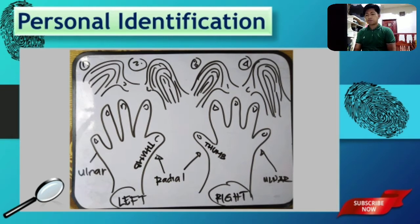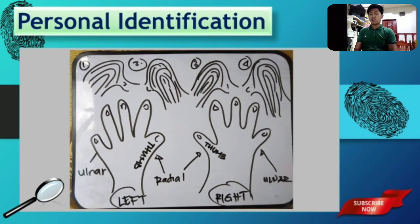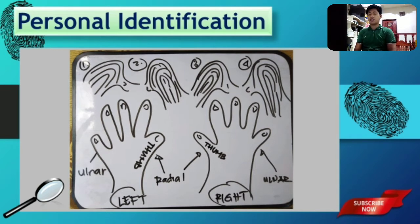For figure number two, if that pattern is taken from the left hand, it is an example of a radial loop, because the recurving ridge opens towards the thumb. If that same pattern is taken from the right hand, it would be considered an ulnar loop. For figure number three, if taken from the left hand, that will be considered as an ulnar loop; if taken from the right hand, it will be classified as a radial loop. For figure number four, if taken from the left hand, it will be a radial loop; if taken from the right hand, it will be an ulnar loop.